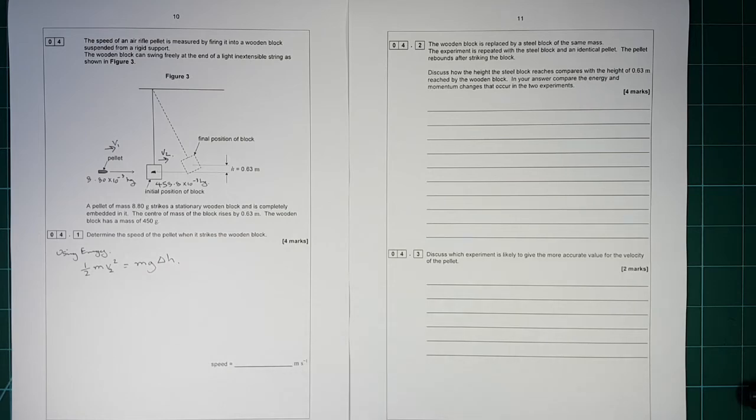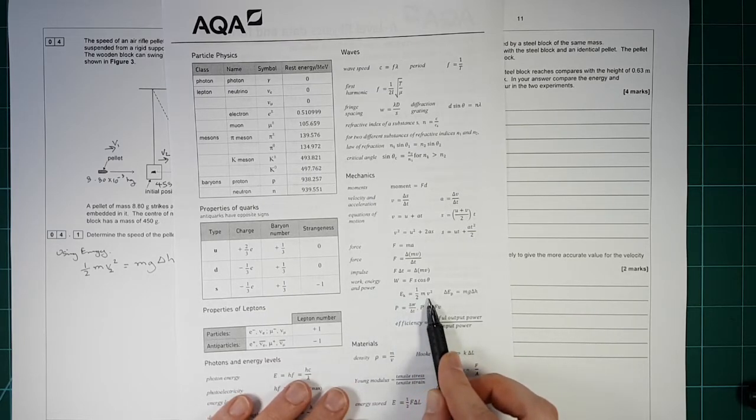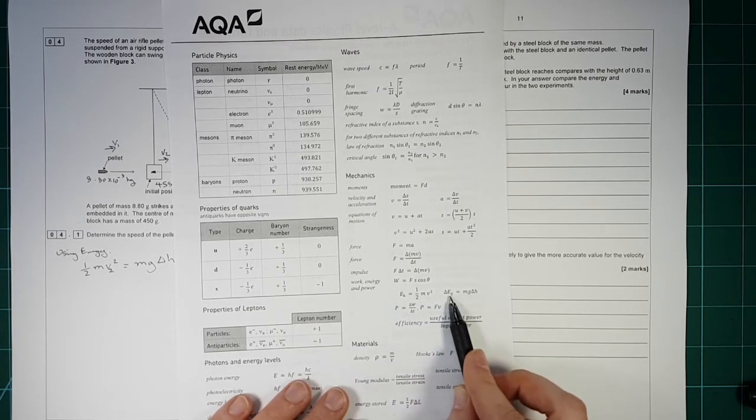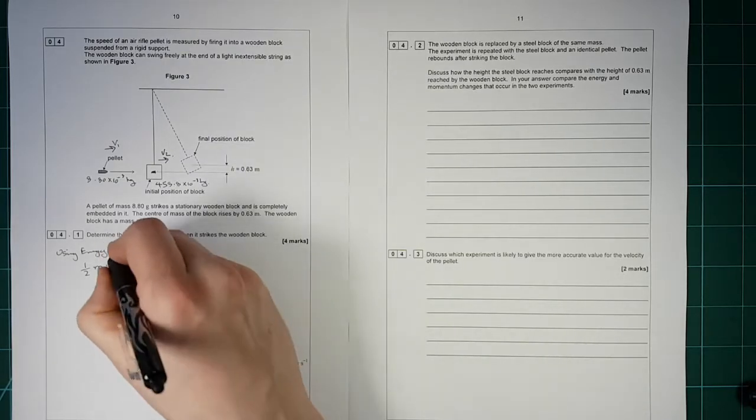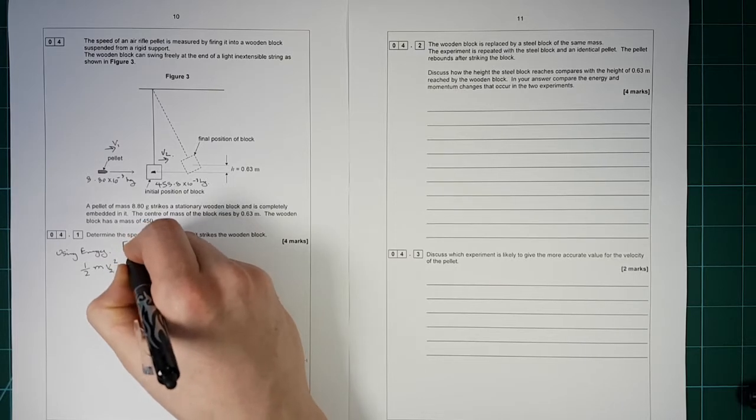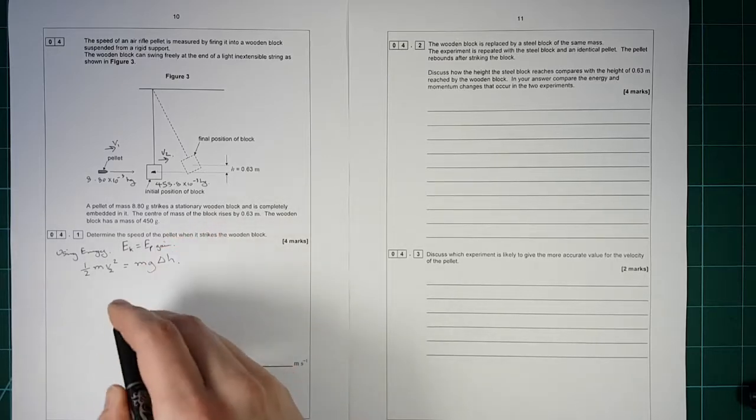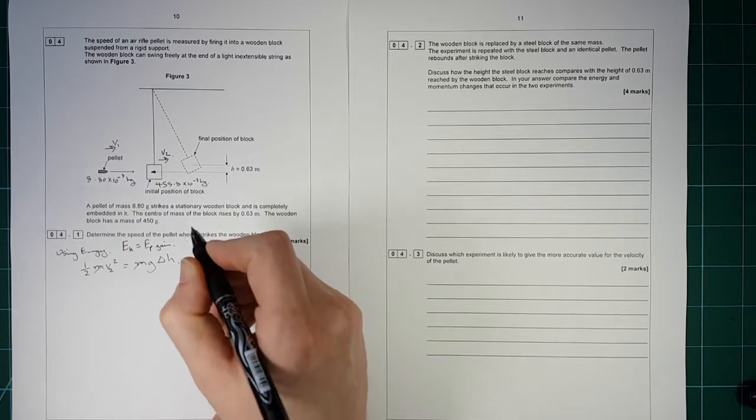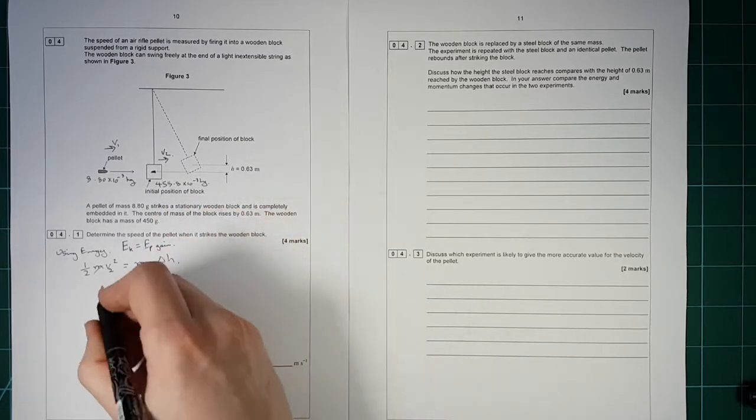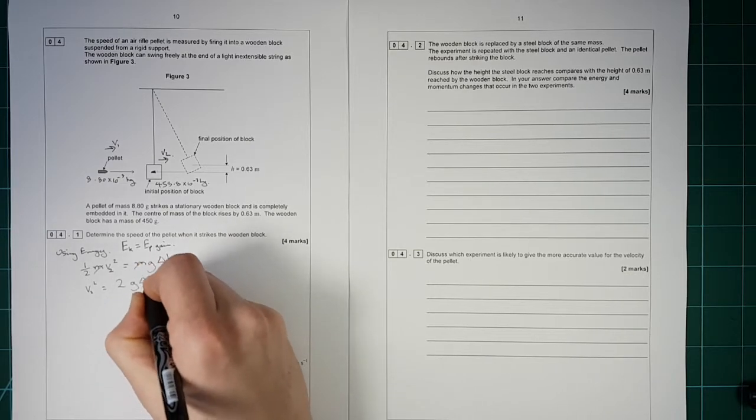So what we're doing there is we're using the basic energy equations which are located here. Your kinetic energy is equal to half mv squared and the potential energy due to gravitation is equal to mgh. So I might just write that above. Ek is equal to Ep gain. So the amount of kinetic energy lost is equal to the gain in potential energy. Right, so the masses cancel. It doesn't matter how heavy the block is.